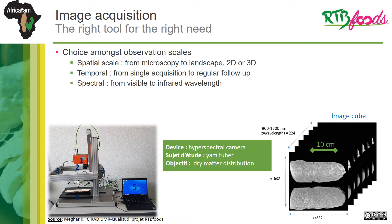Depending on the scientific question, there is now a huge diversity of imaging techniques. Users can choose amongst different spatial scales, from microscopy up to landscape, different temporal scales — single acquisition or regular follow-up of the same scene — and finally a spectral scale, because we now have the possibility to go further than visible wavelengths, with for instance a hyperspectral camera that will be presented by Karima Meghar in the next presentation.